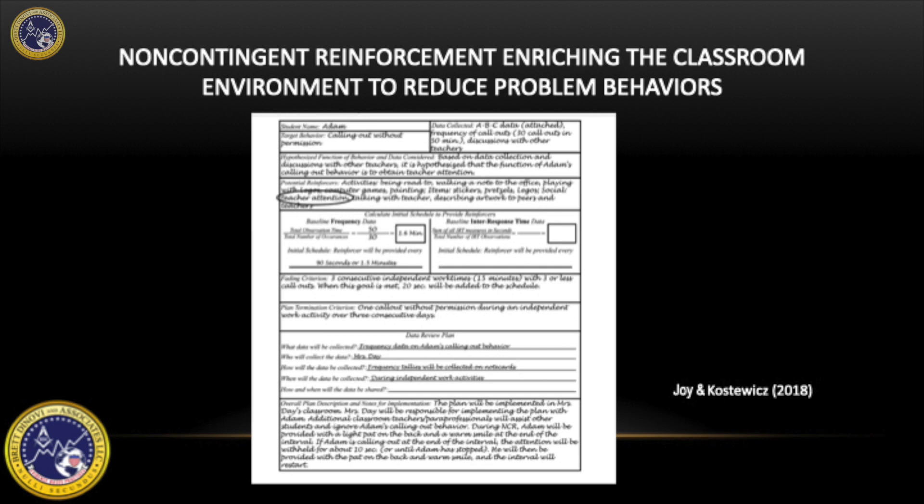The next figure is an example of an NCR planning worksheet. On this worksheet, you will see the written-out steps previously discussed and the calculation for how often to provide non-contingent reinforcement. In this example, the teacher is providing the student Adam non-contingent reinforcement every 90 seconds. As always, to help disseminate the science of ABA, please subscribe to our channel and share this video.